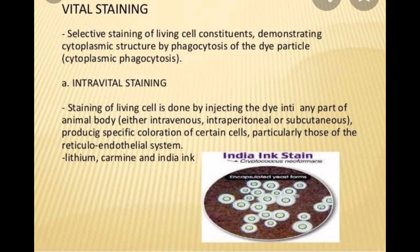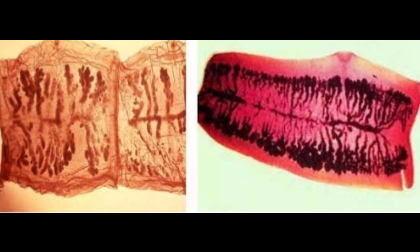India ink is famous for demonstrating Cryptococcus neoformans — a type of fungi — and also the tapeworm species such as Taenia saginata and Taenia solium, where the India ink is injected into the uterus of the parasite.